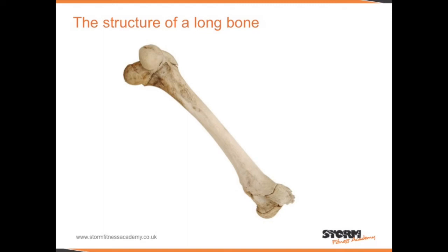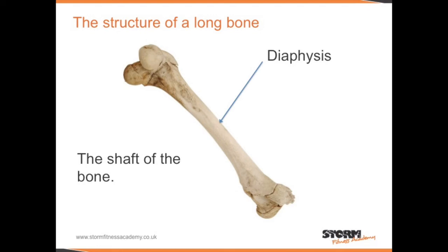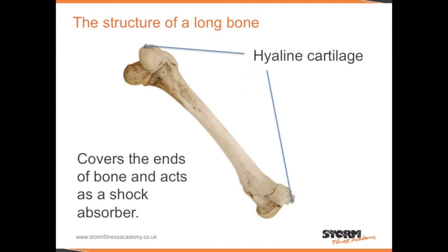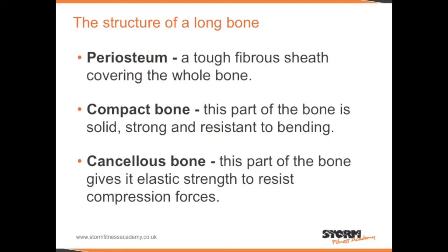A long bone, such as those found in the femur, the humerus, and the phalanges, is living tissue and has various components that make up its structure. The expanded portion found at each end of the bone is known as the epiphysis. The long shaft of the bone is known as the diaphysis. Hyaline cartilage covers the ends of bone and acts as a shock absorber. A long bone is also surrounded by the periosteum, which is a tough fibrous sheath covering the whole bone.